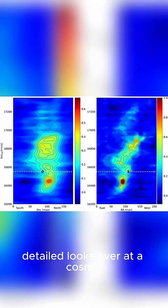Astronomers have just taken one of the most detailed looks ever at a cosmic mega-maser, and what they found reveals the violent heart of a galaxy in the middle of a merger.